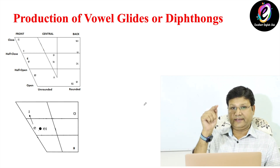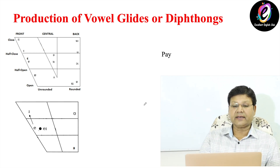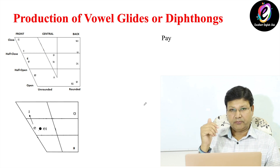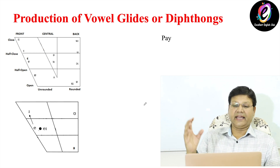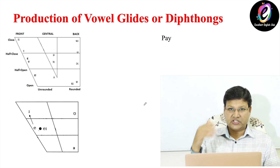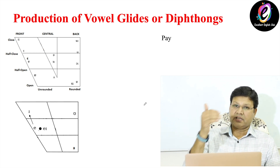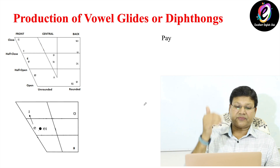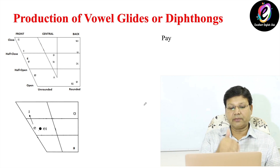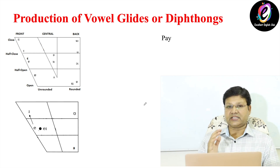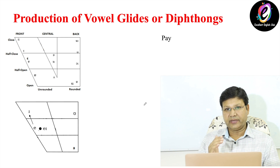A-E — for example, words like 'pay,' 'bay,' 'today,' and 'day.' This type of sound is produced with the help of this diphthong, A-E.